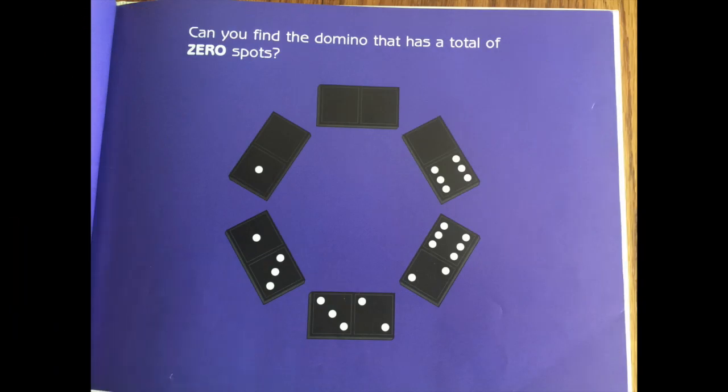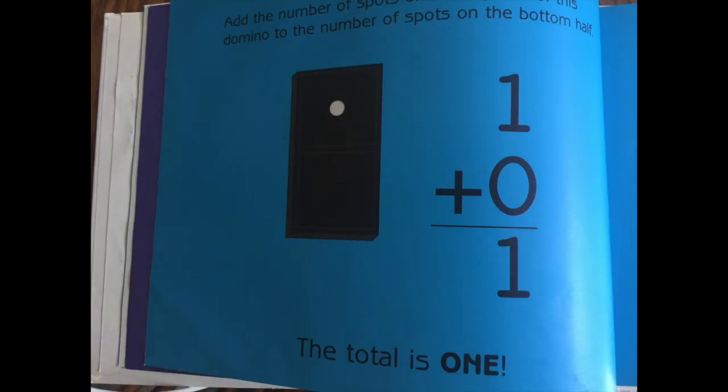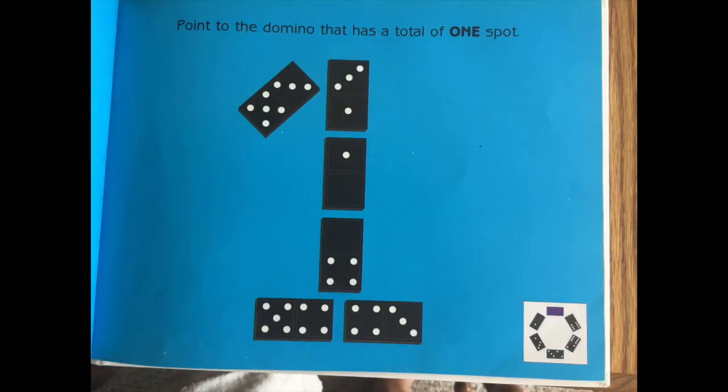Can you find the domino that has a total of zero spots? Add the number of spots on the top half of this domino to the number of spots on the bottom half. One plus zero is one. The total is one.